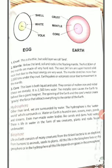The crust is a thin but solid layer which we call the land. Below the land, soil and rock float in the mantle. The first 80 km of the mantle are made of very hard rock, and the next 241 km is super-heated solid rock.